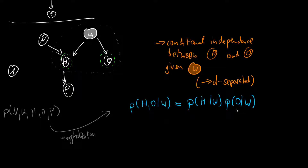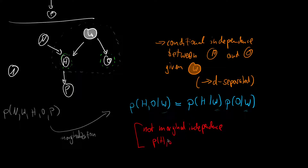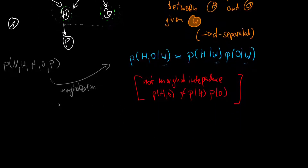That's important. Conditional independence — we always have this conditioning. This is not marginal independence, which would be P(H, O) = P(H) × P(O). So that is not what we have here. Okay, this is our first example. Let's continue with the second one.